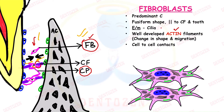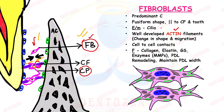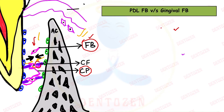PDL fibroblasts have contractile properties and motility. Their functions include not only collagen formation but also elastin formation, ground substance production, formation of enzymes that degrade collagen, periodontal ligament remodeling, and maintaining the width of the periodontal ligament.